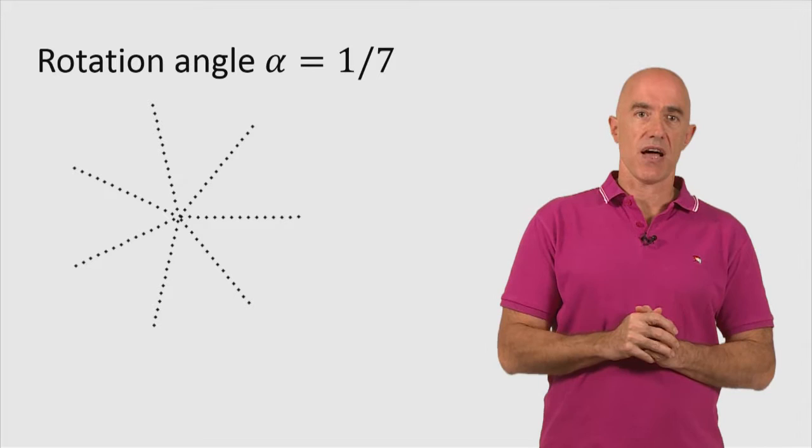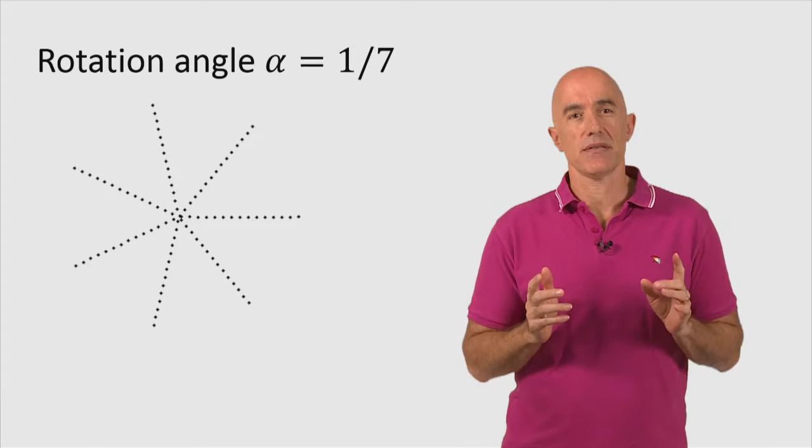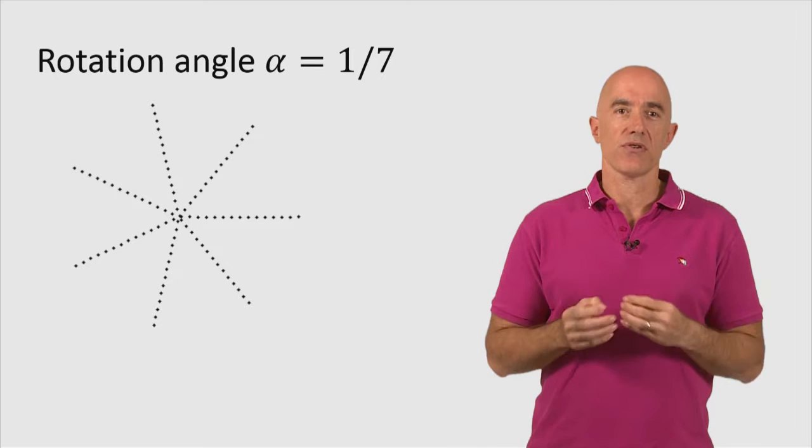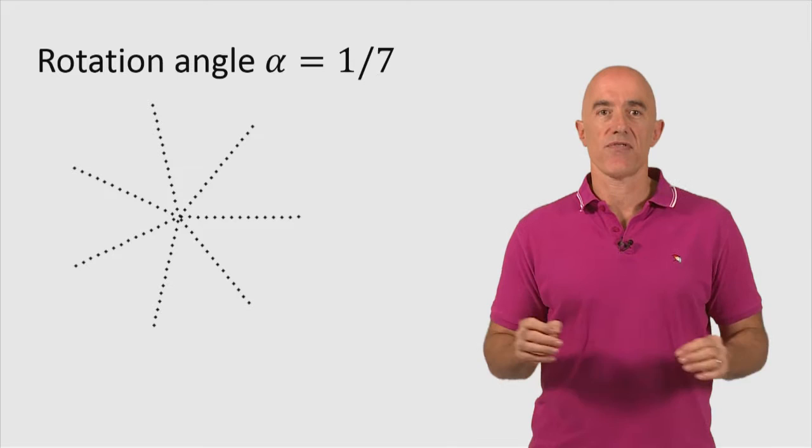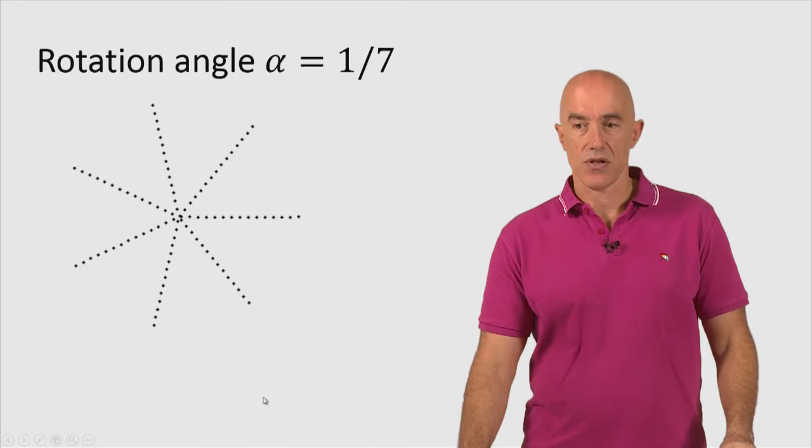This doesn't look like a sunflower. The florets are not filling up the sunflower head in any way. What's the problem? The problem is that alpha is a rational number. If you use a rational number for alpha, you will always get back to where you started from. So you'll always end up with lines. What matters is the denominator here. So seven means you'll end up with seven lines. So the answer is not to use a rational number.